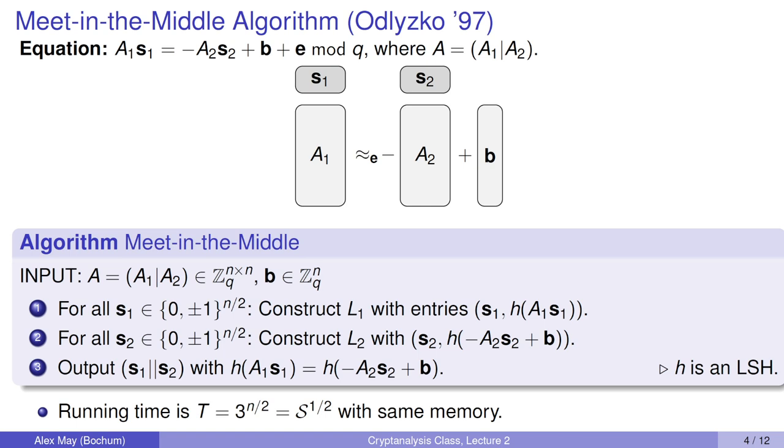In an algorithm, this would mean we would enumerate all S1 now being n/2-dimensional and ternary. We would construct a list L1 with all these candidates S1 and the left-hand side A1 S1, which we hash. The same we would do for S2, again being n/2-dimensional ternary vectors. We enumerate them and the right-hand side minus A2 times S2 plus B, and we would hash that. We need that the right-hand side equals the left-hand side up to our unknown ternary E. This is done by locality-sensitive hashing, which was introduced by Odlyzko in 1997.